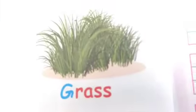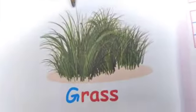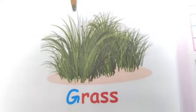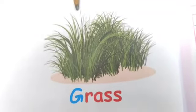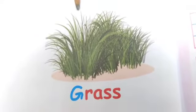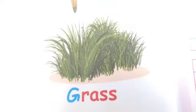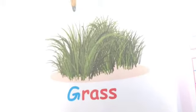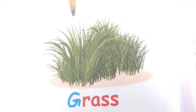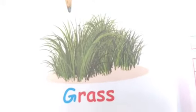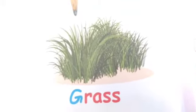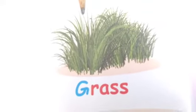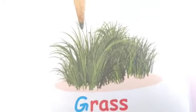What is this? This is grass. What is the colour of grass? It is green. G — grass.